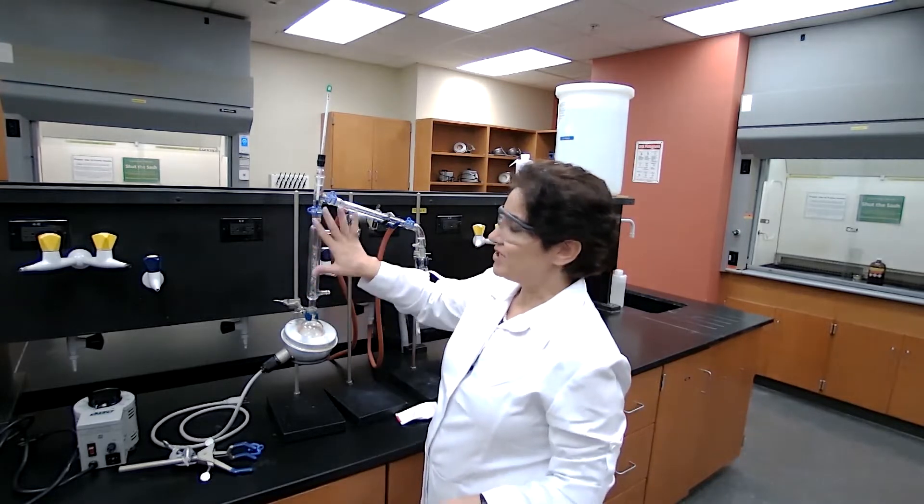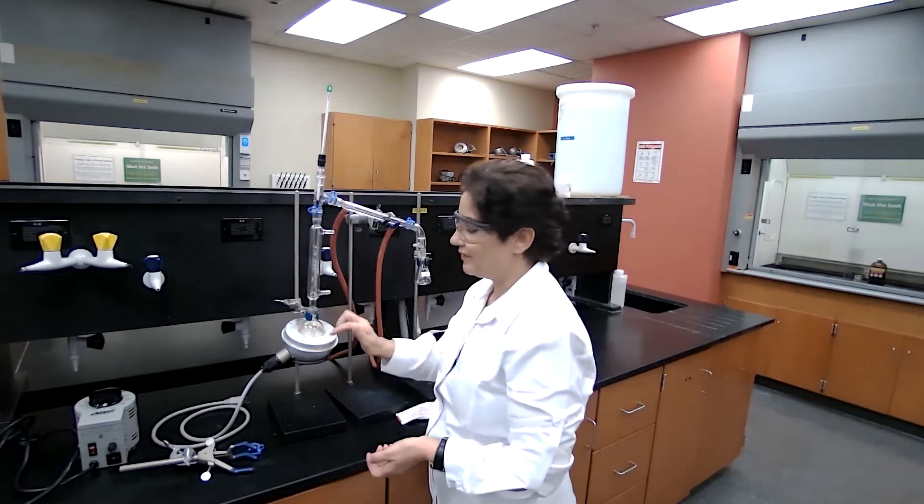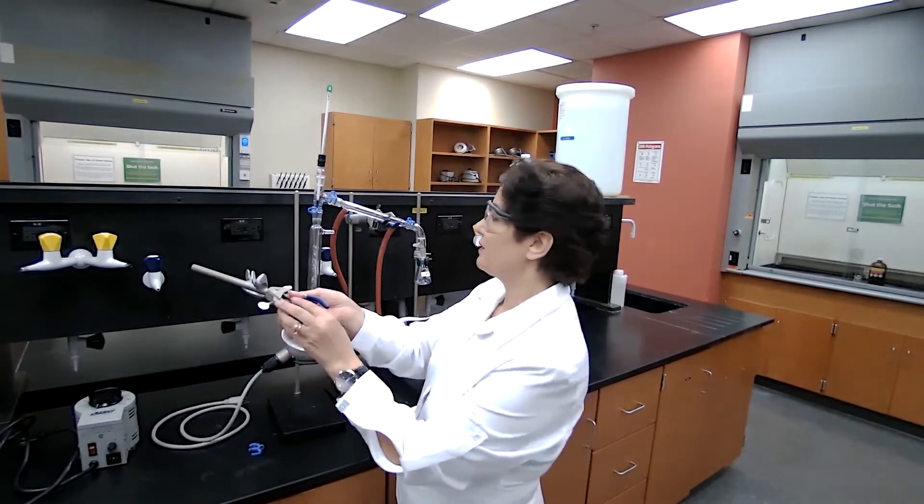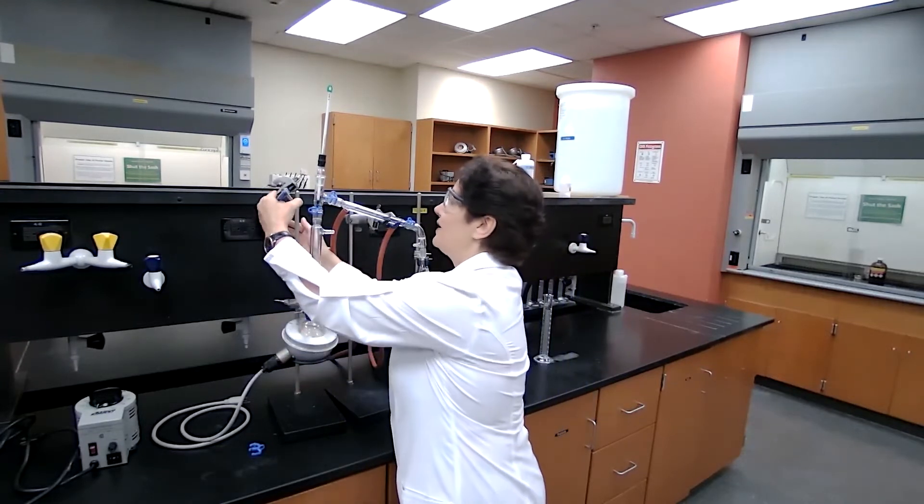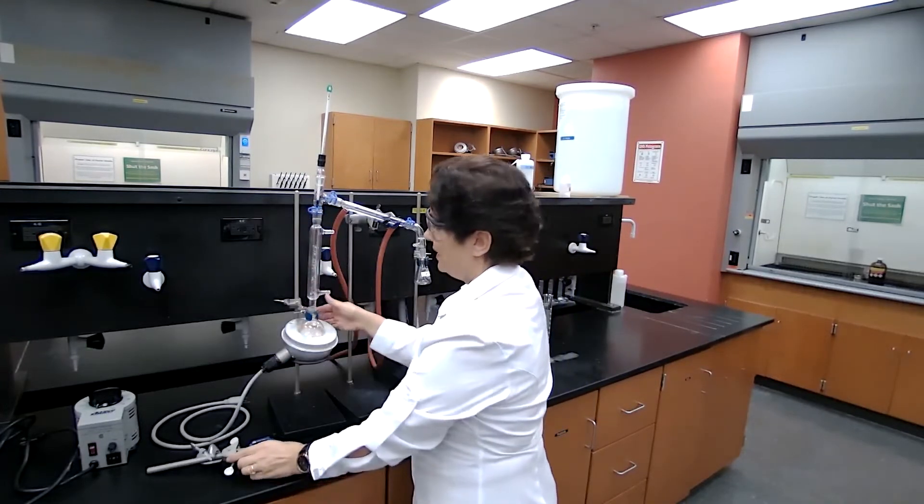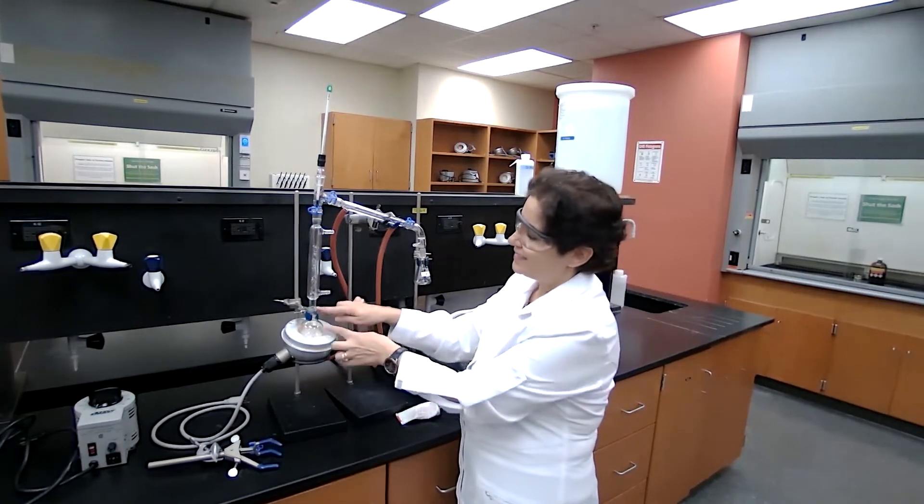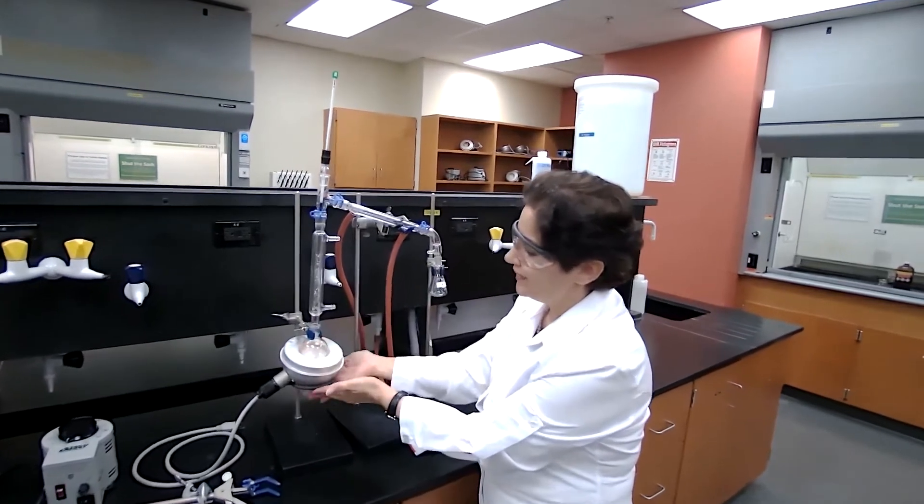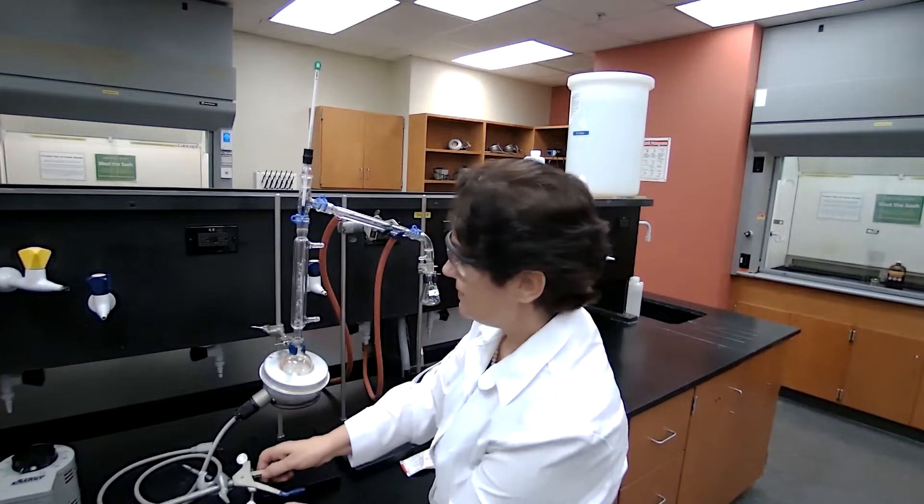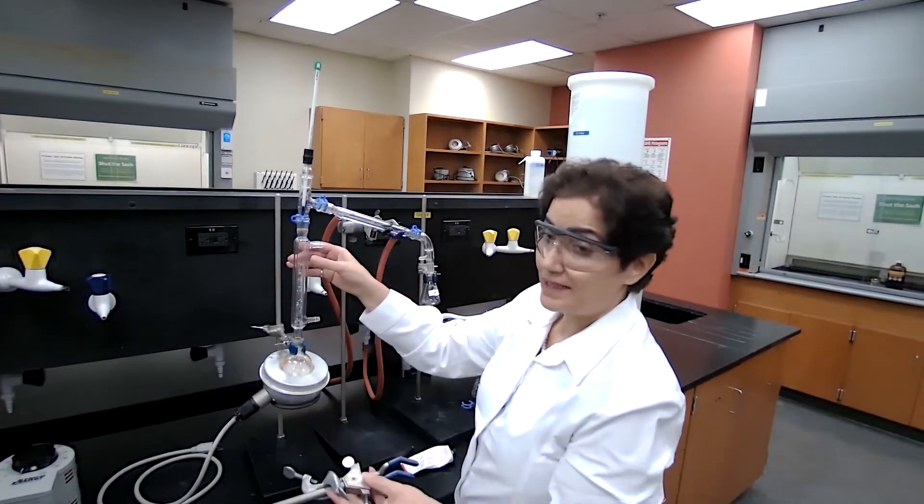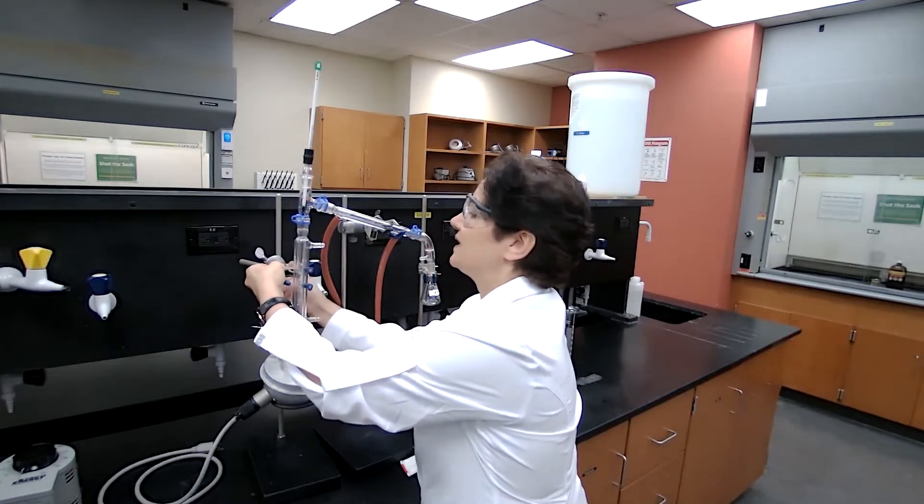When you insert the fractionating column between the distillation head and the boiling flask, you want to make sure to use a three-finger clamp and support this with the clamp. If you don't use it, as soon as you open and lower the ring trying to get the flask out to add the chemicals, it will disconnect and drops and breaks.